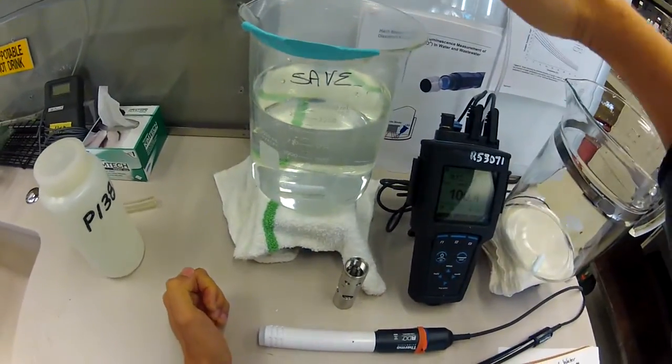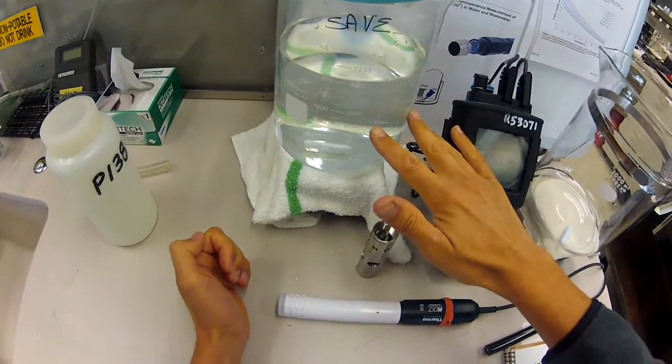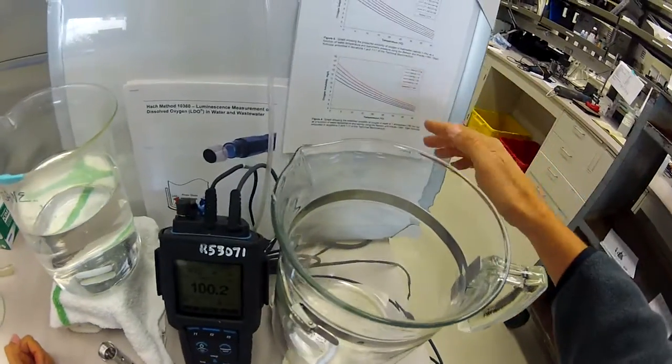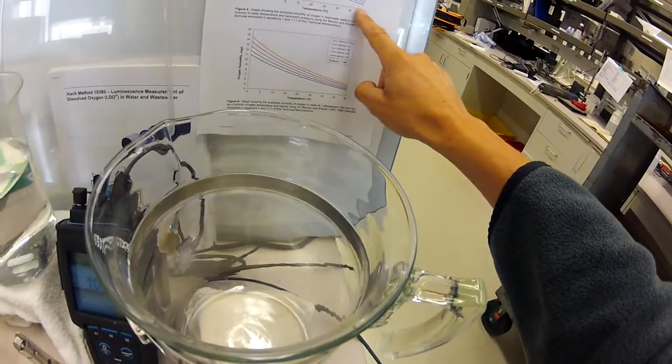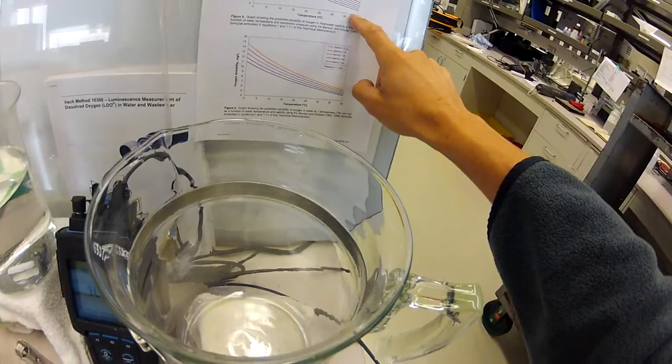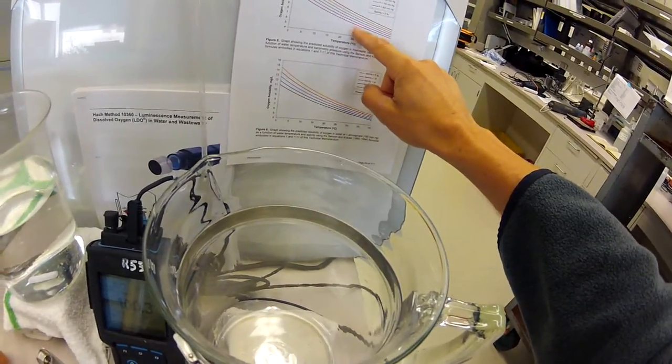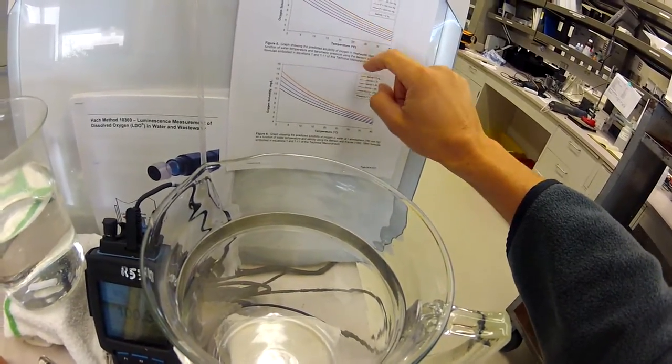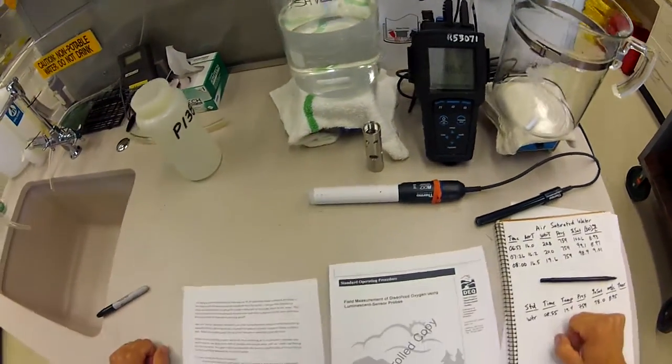If you have more air pressure pushing down on the water, you're going to be forcing more oxygen into the water and you're going to have a higher concentration of oxygen. You get this type of slope shown on this graph. The higher the temperature, the lower the milligrams per liter of oxygen at 100% saturation. If you go up in elevation where you have less barometric pressure, you decrease the concentration of milligrams per liter.